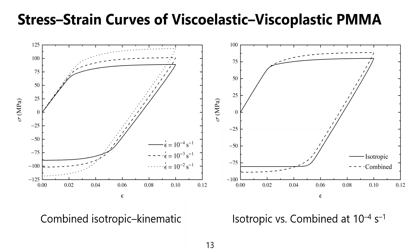We then used the present constitutive model to simulate the stress-strain responses of viscoelastic viscoplastic PMMA. The left figure shows the stress-strain curves exhibiting combined isotropic kinematic hardening at different strain rates. As can be seen, the material becomes stiffer as the strain rate increases, which agrees with the theories of viscoelasticity and viscoplasticity. The right figure compares the stress-strain curve at a strain rate of 10^-4 per second, with that of PMMA only exhibiting isotropic hardening. In the presence of kinematic hardening, the material becomes stiffer in the viscoplastic regime and exhibits prominent nonlinearity at an early stage during unloading.